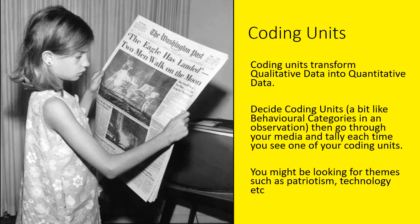When you do a content analysis, it's a little bit like an observation. In an observation, you would first decide your behavioural categories, then watch a scenario and tally every time you saw those categories. For a content analysis, it's an indirect observation — you're looking at something, but you still need to decide on categories, which in this case we call coding units.